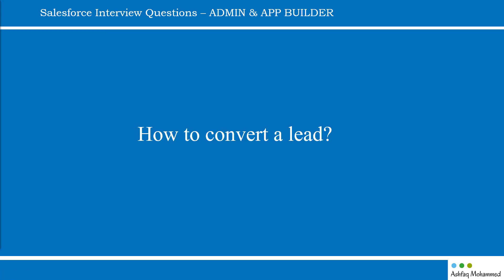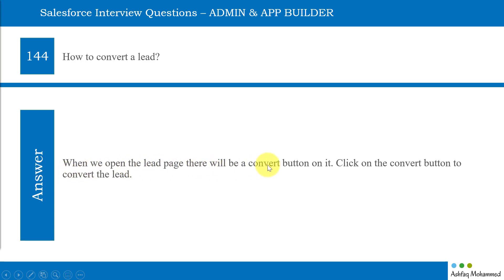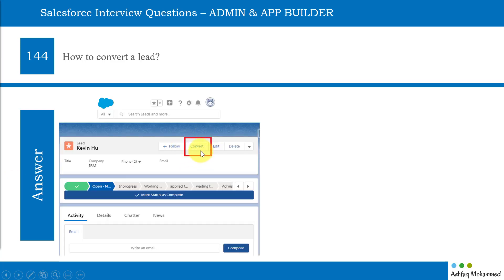The next question is: how to convert a lead? When we open the lead page, there will be a convert button on it. Click on the convert button to convert the lead. The lead is the first information, and based on how we are interacting with the customer — if the customer is showing more interest in our product — we can convert the lead. Every company has its own basis for when to convert the lead. When we think this customer is more interested in our product, then the company goes and converts the lead.